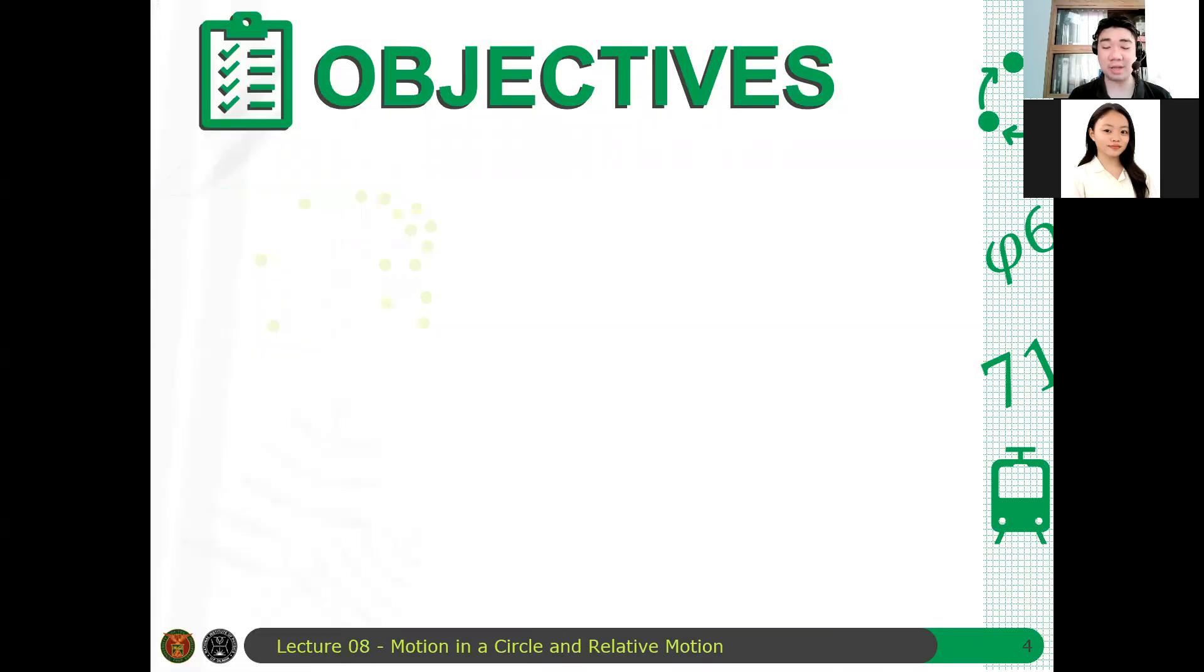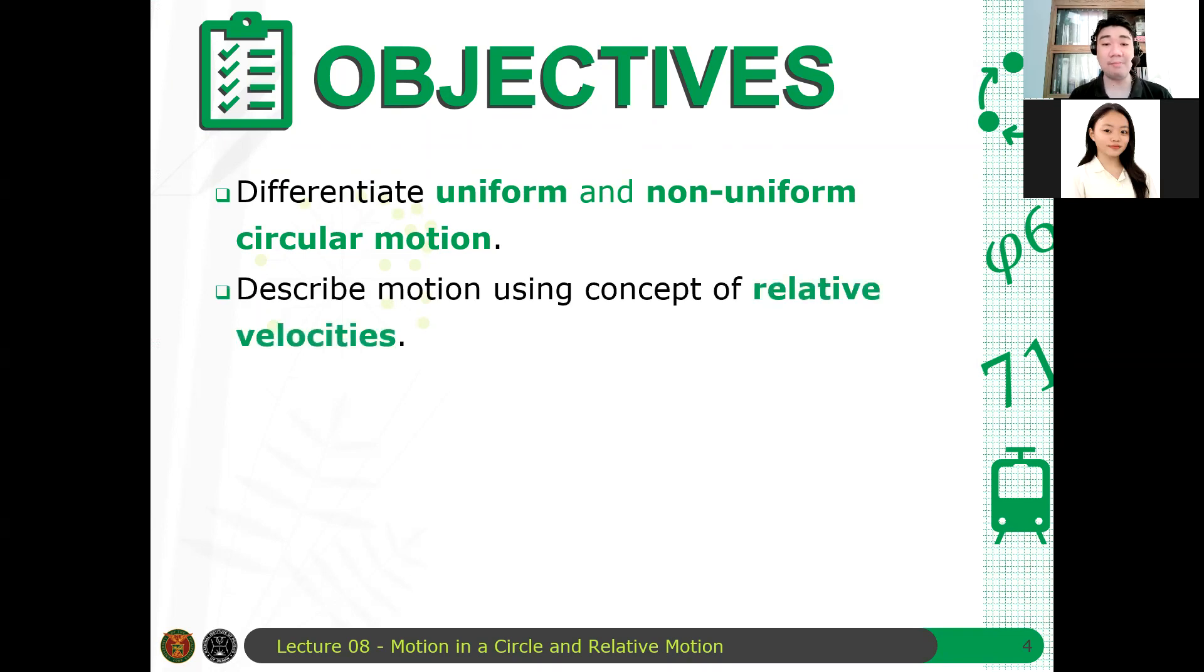Here are the objectives of this discussion. So by the end of this session, you should be able to first differentiate uniform and non-uniform circular motion. So ano yung specific na case para sa uniform circular motion? Babalik tayo dito sa lecture noong Tuesday. Because that will be an important topic for uniform circular motion. And then we describe motion using concept of relative velocities.